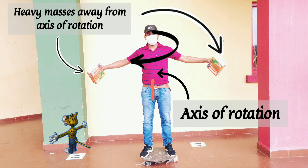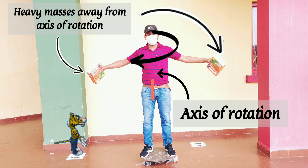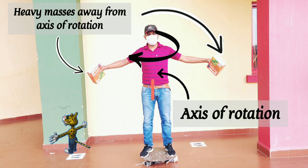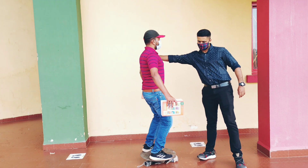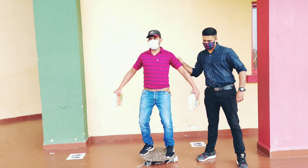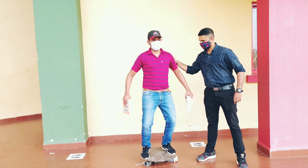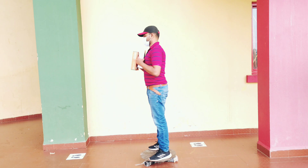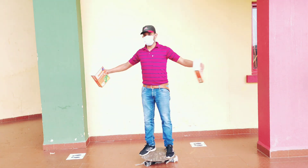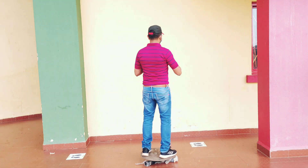By changing the position of these heavy masses from the axis of rotation, I can change my rotational speed, i.e., the angular velocity, without any external help. By changing the position of the masses from the axis of rotation, I can change the moment of inertia of my system, thereby changing my rotational velocity, i.e., the angular velocity.